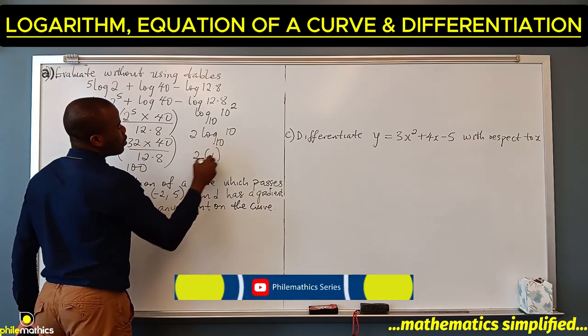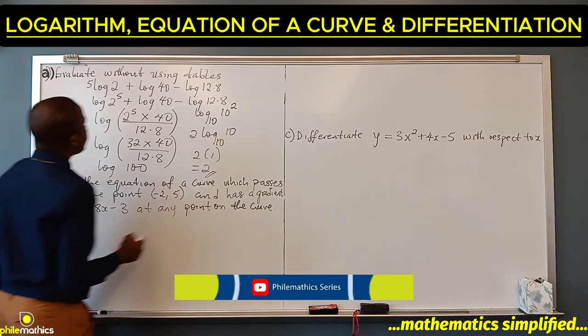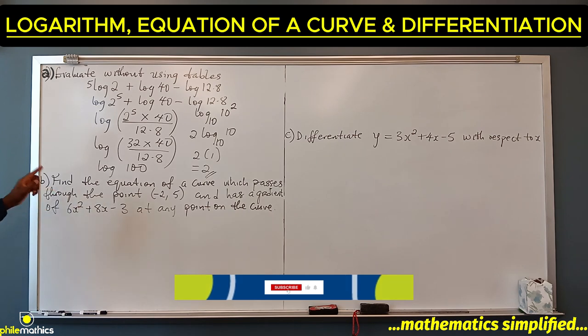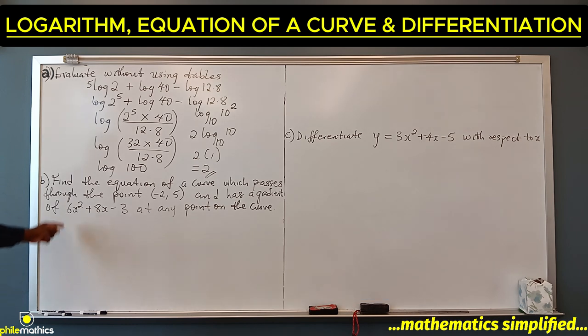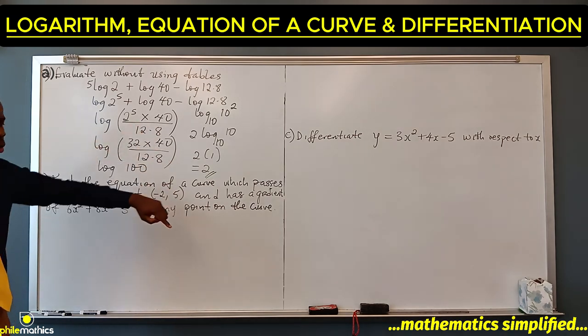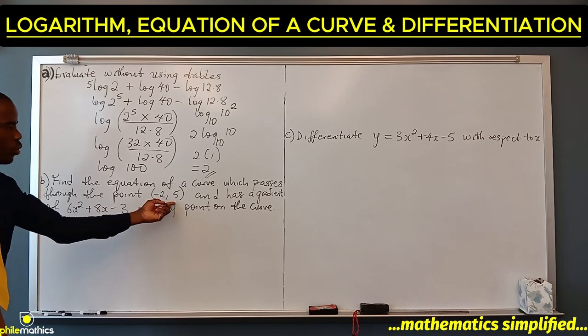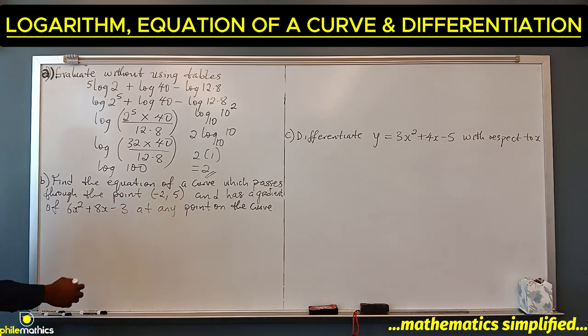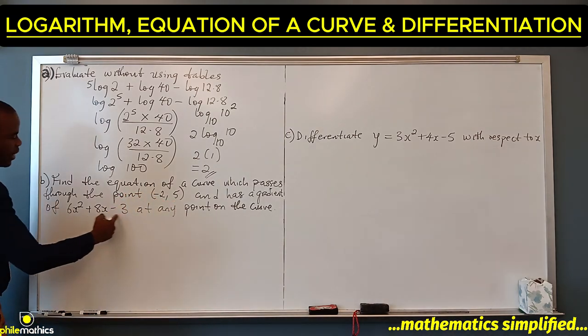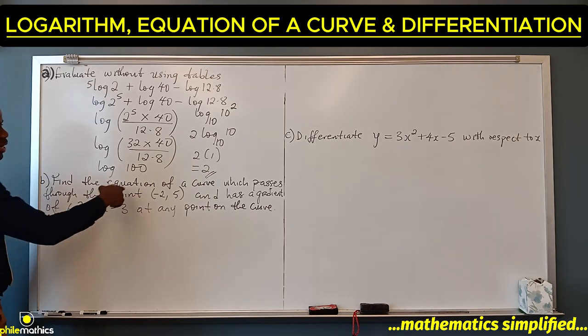Find the equation of a curve which passes through the point (-2, 5) and has a gradient of 6x square plus 8x minus 3 at any point on the curve. The equation we are looking for has this as its gradient at any point on the curve, and this is a particular point on the curve. So we have to integrate this to get the equation of the curve.